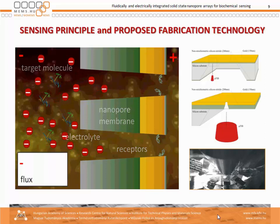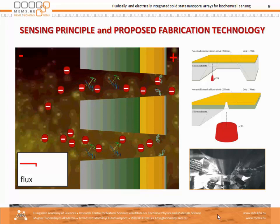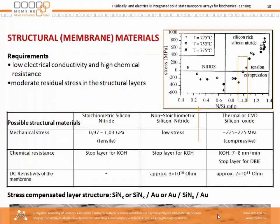If you want to have specificity, we have to decorate the internal surface of the pore, and the functionalization should be done with receptors that are specific for the targeted species. We are talking about a relatively thin, large membrane which has to be drilled, and in order to enhance parallelicity and reduce time, we use a multiple number of nanopores.